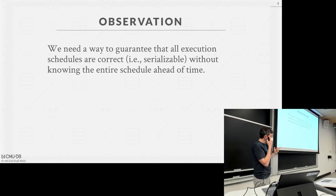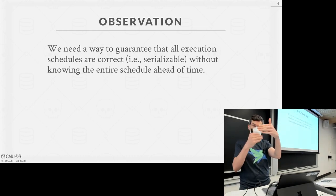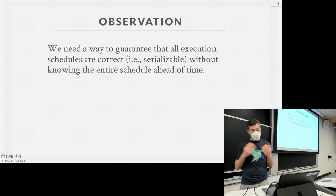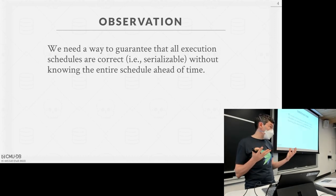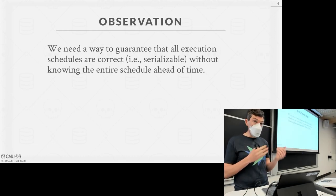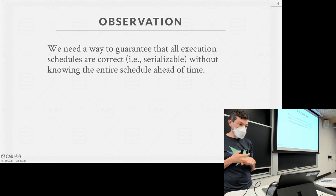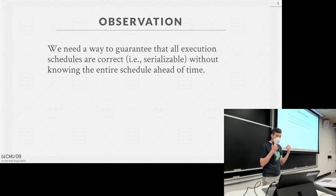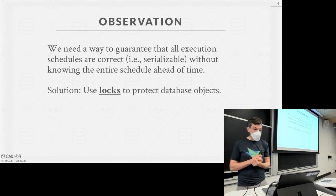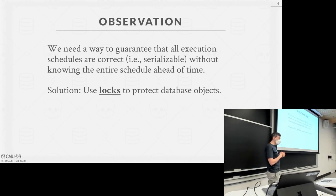Last class was about looking at static schedules — a static list of transactions with known read and write operations. This is good for pencil and paper to understand what serializability means, but almost no real system works this way because you don't know the read-write set ahead of time. Today's class will be about how, at runtime, as queries arrive from transactions, we figure out a way to ensure serializability. We'll be using locks to protect database objects.